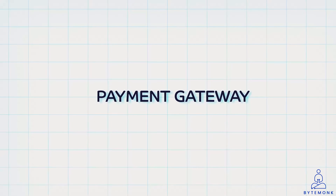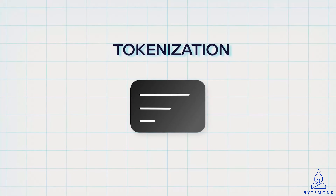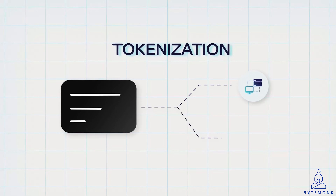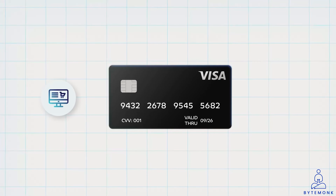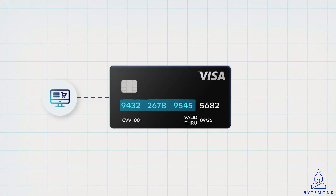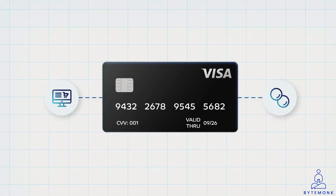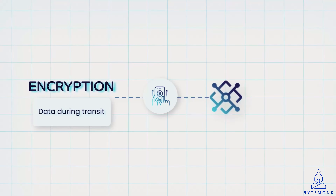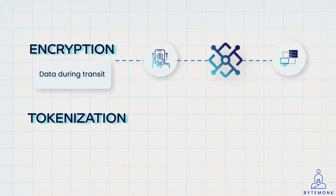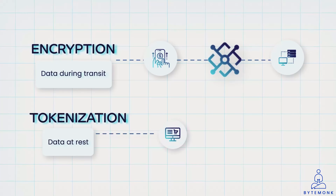Payment gateways also use tokenization to protect sensitive payment data when it's stored, whether on a merchant server or within the payment gateway system. When you have made a purchase on an e-commerce website, instead of storing your actual credit card number, the merchant stores a token that represents your card. Encryption primarily protects data during transit — the journey from your device to the gateway and then to the merchant — while tokenization protects data at rest, when it is stored on the servers.